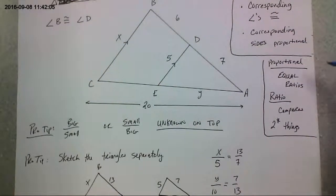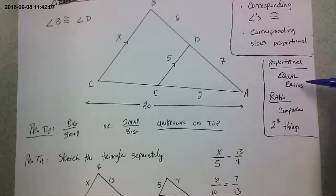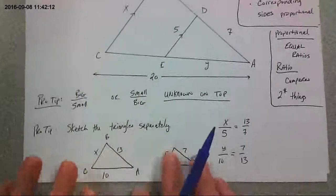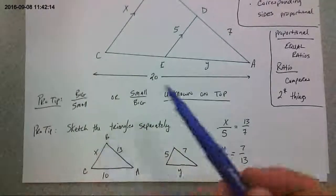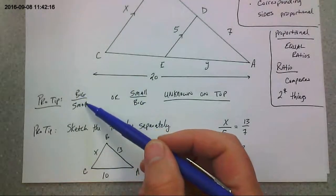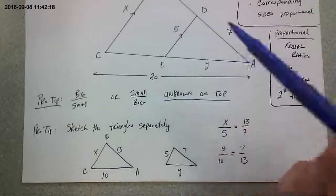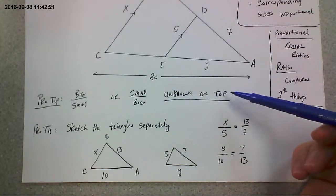Now, one thing you gotta remember is that proportions are equal ratios and a ratio compares two things. So that's what we're gonna set up. Okay, a little pro tip for you right here. You could do the ratio of the big over the small or the small over the big, but the thing that makes it easy is if you put the unknown portion on top.